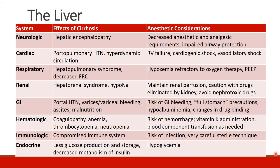How should we approach patients with liver disease when we provide anesthesia? This chart summarizes many of the effects of cirrhosis and anesthetic considerations. For the neurologic system, we worry about hepatic encephalopathy, patients who may have decreased anesthetic and analgesic requirements and may be unable to protect their airway. In the cardiac system, patients with cirrhosis may have portal pulmonary hypertension and hyperdynamic circulation, and are at risk for right ventricular failure, cardiogenic shock, and vasodilatory shock.